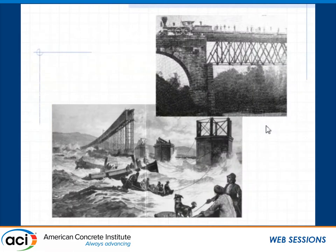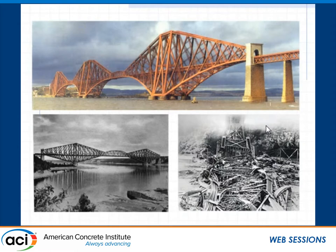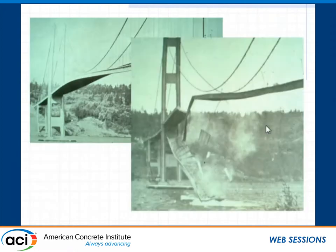This goes back to the 1800s — the failure of the Tay Bridge, the failure of the Ashtabula Bridge near Cleveland. And since I've lived in Cleveland for 12 and a half years, I learned how to pronounce Ashtabula correctly. These early failures showed that when you go from wooden trusses to metal trusses, sometimes you get things wrong. The Tay Bridge was replaced by the much more robust Forth Bridge. Then the Quebec Bridge had a complete failure, followed by another failure during construction. And of course we learned from Tacoma Narrows about the phenomenon of aeroelastic flutter.